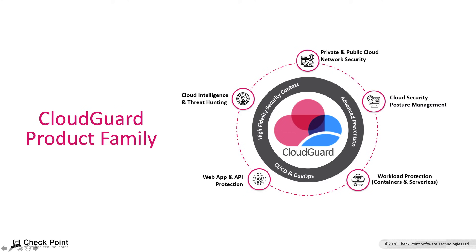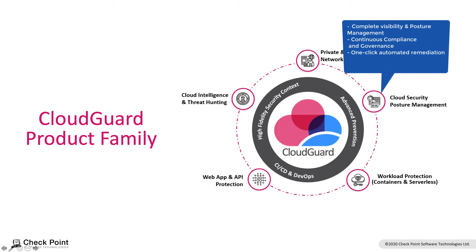Moving to the right side is the Cloud Security Posture Management, or CSPM. CSPM focuses on the cloud control plane. It allows you to gain visibility into your cloud access, network configurations, and the metadata around your cloud workloads. It also acts like a virtual auditor, which can run continuous compliance assessments and inform you of misconfigurations and compliance violations based on industry standard frameworks such as PCI DSS. It also allows you to respond to incidents and automatically address misconfigurations using auto-remediation features.